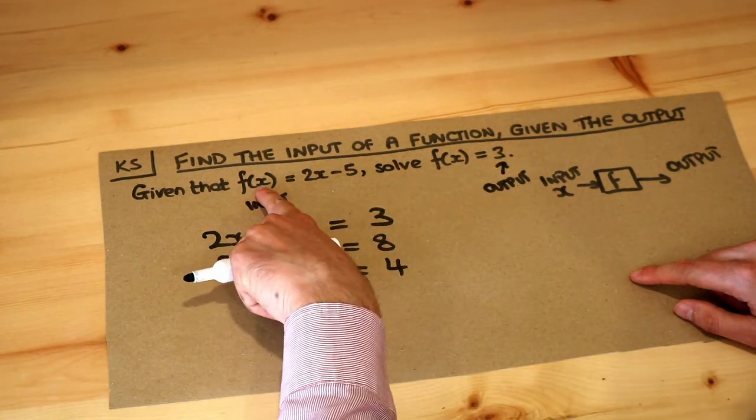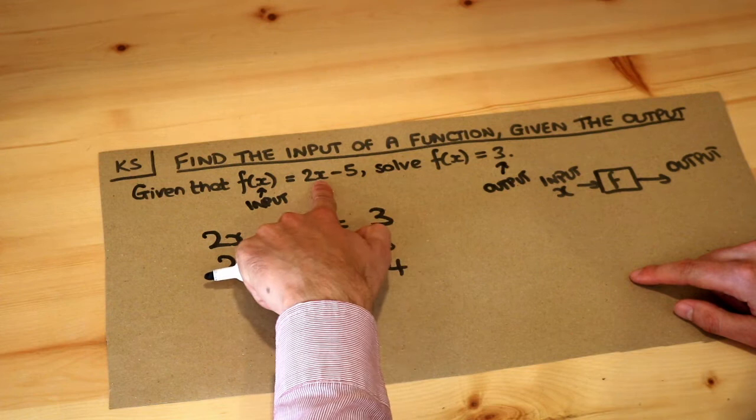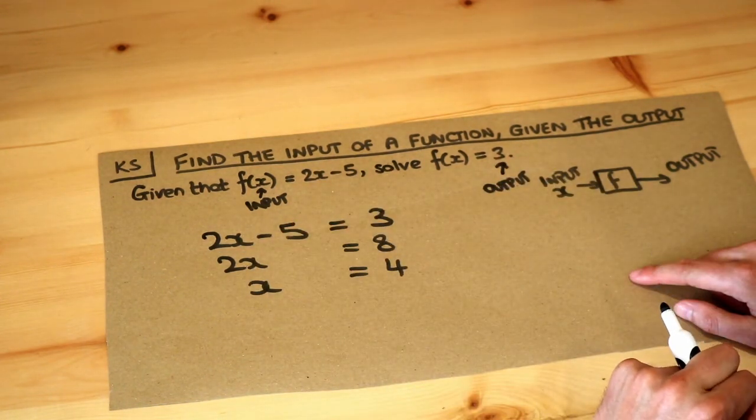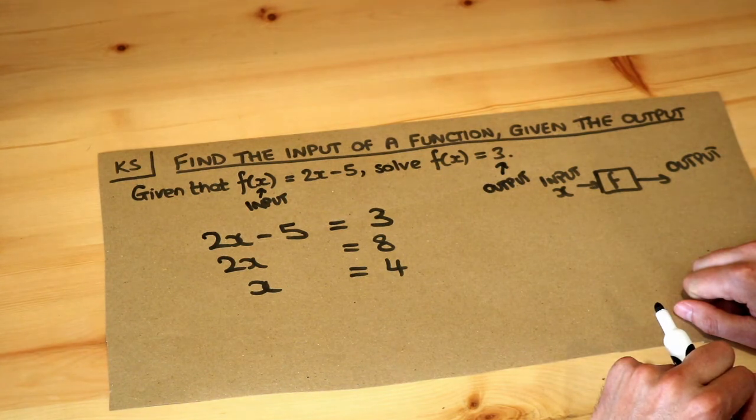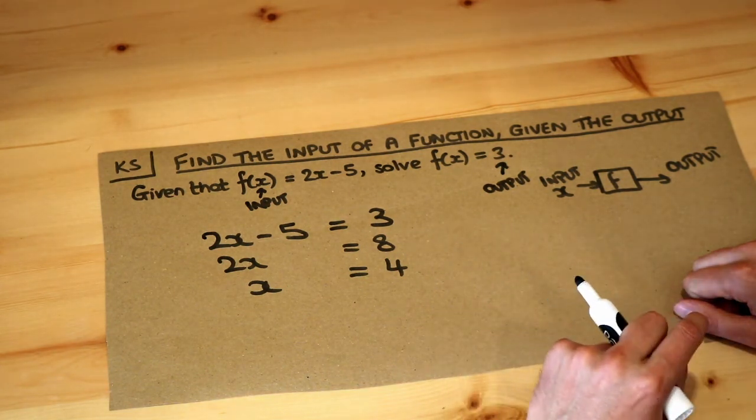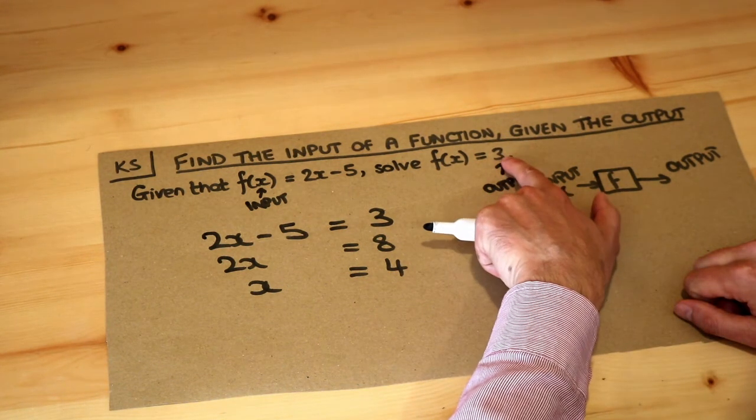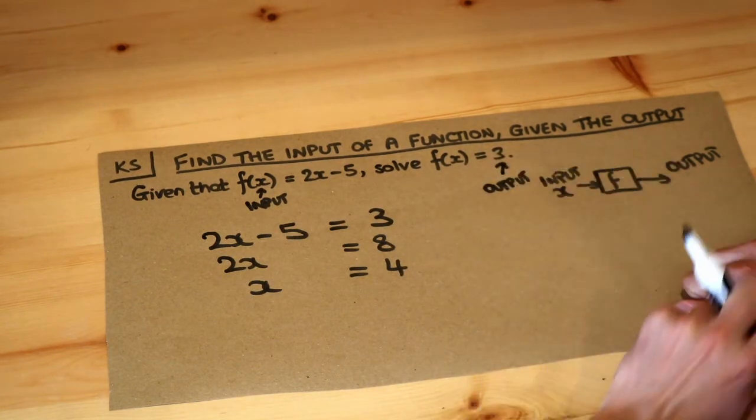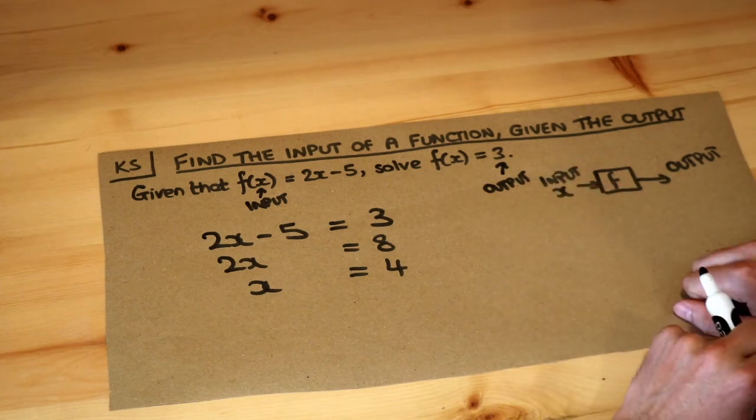Let's check that. If the input was 4, 2 times 4 is 8, minus 5 equals 3, and that indeed matches the output we expected. So the key point here is if you've got the output of 3, you just set your expression f(x) equal to that particular value, in this case 3.